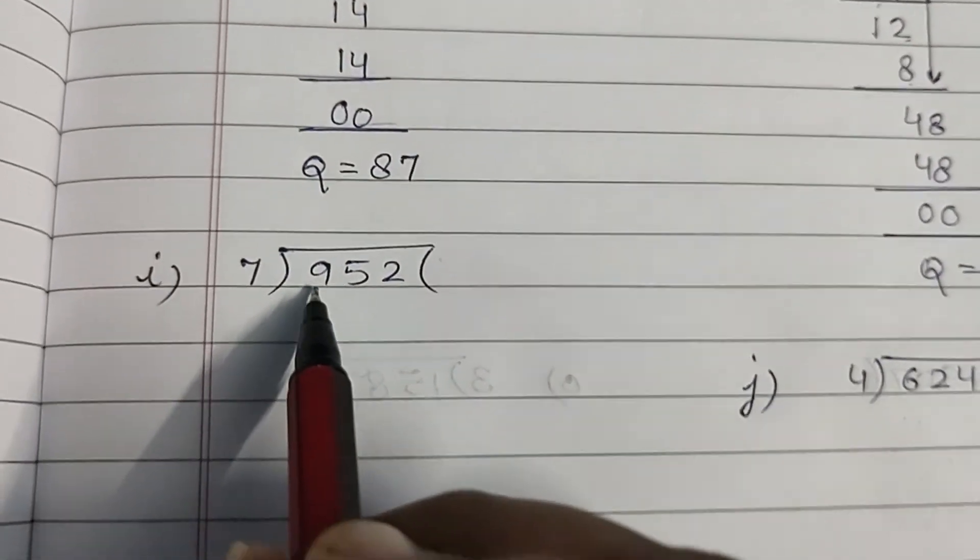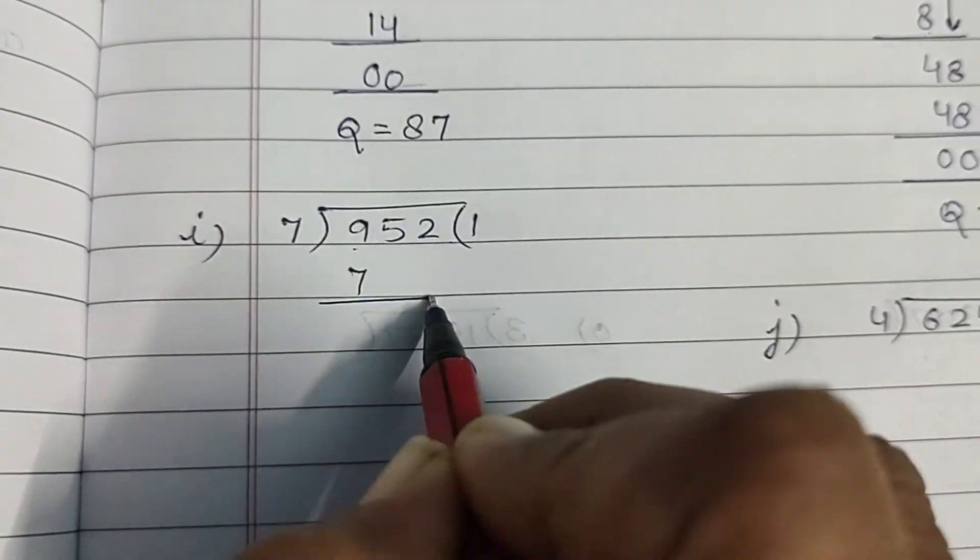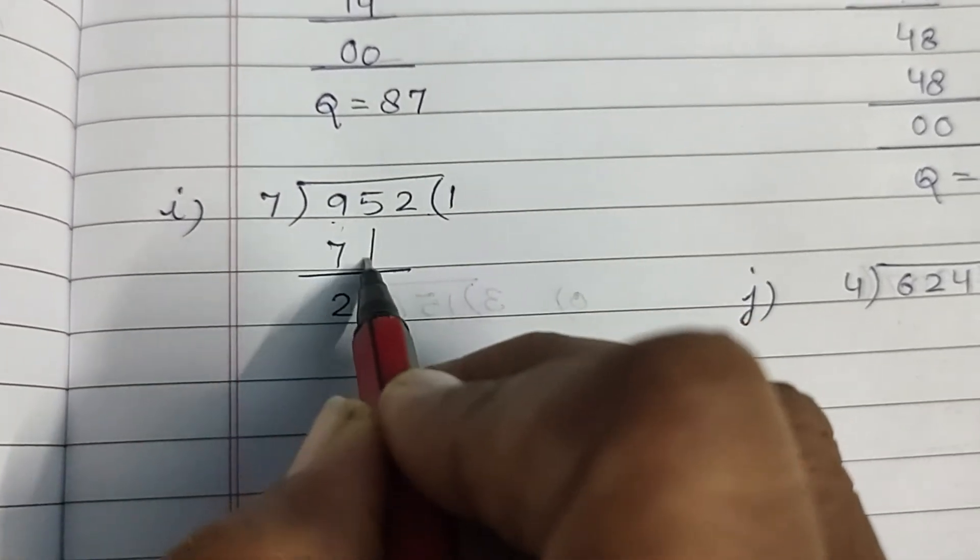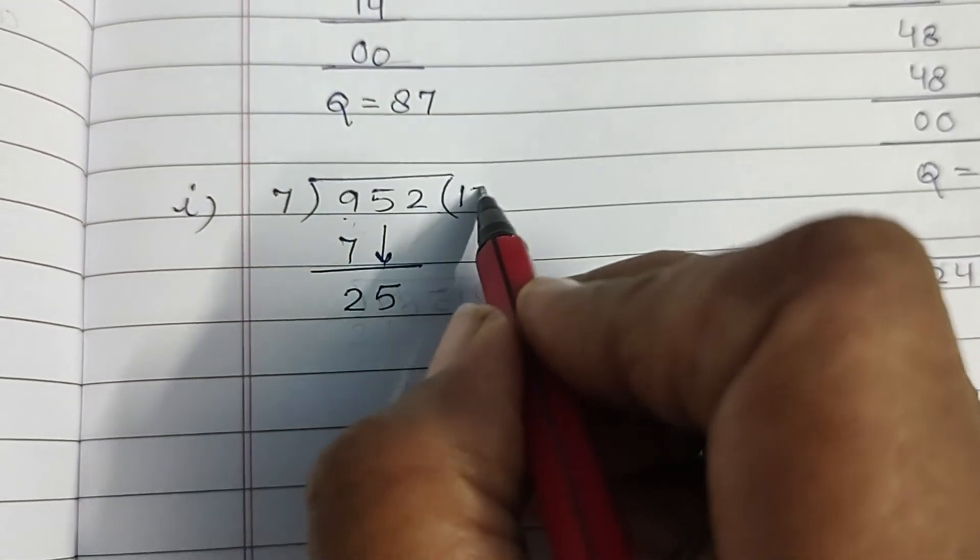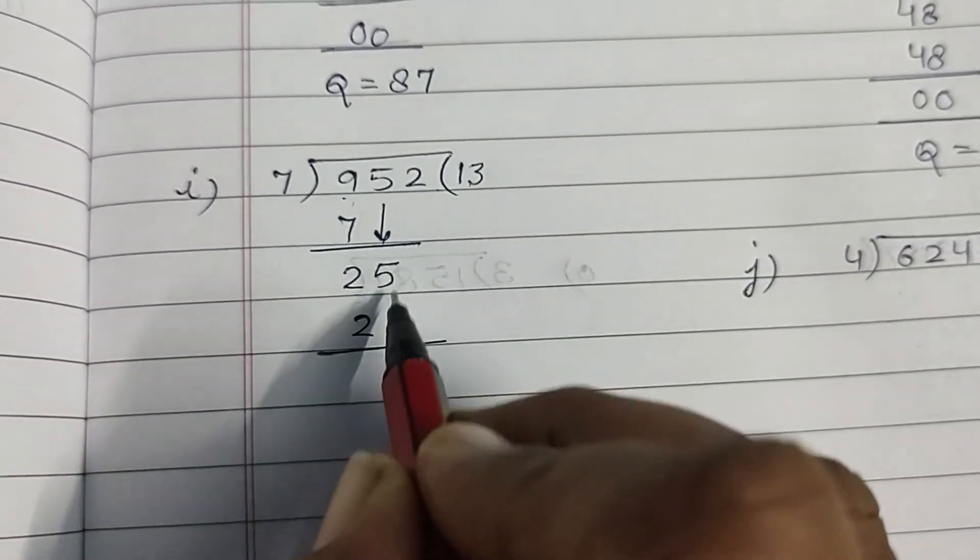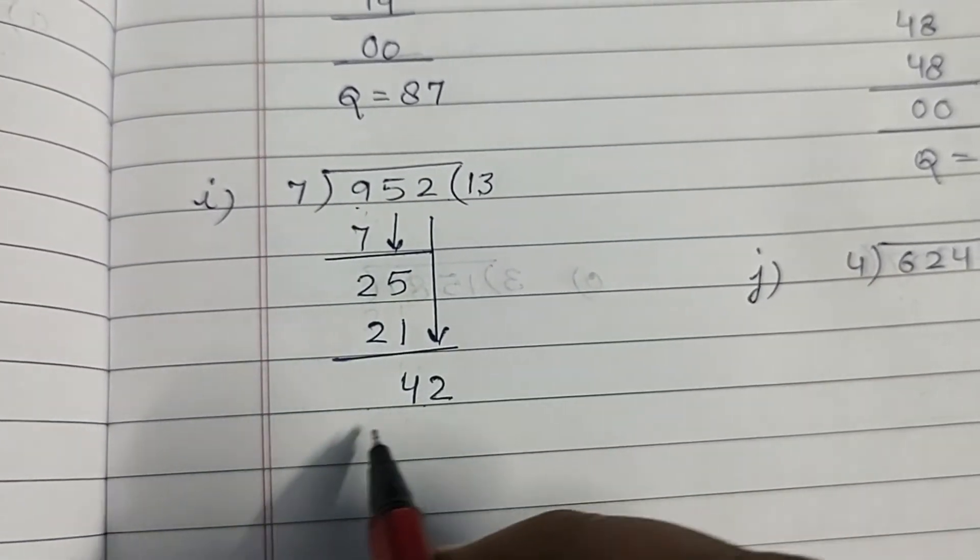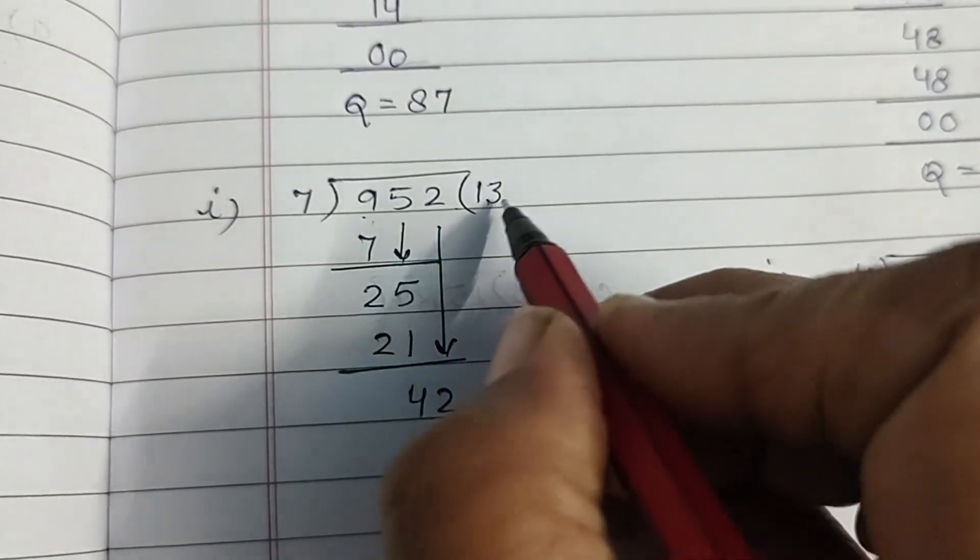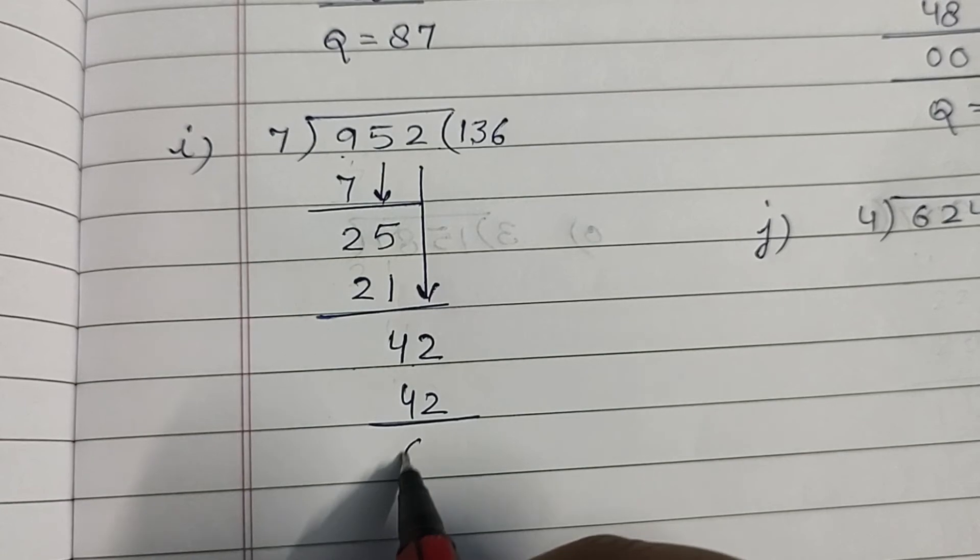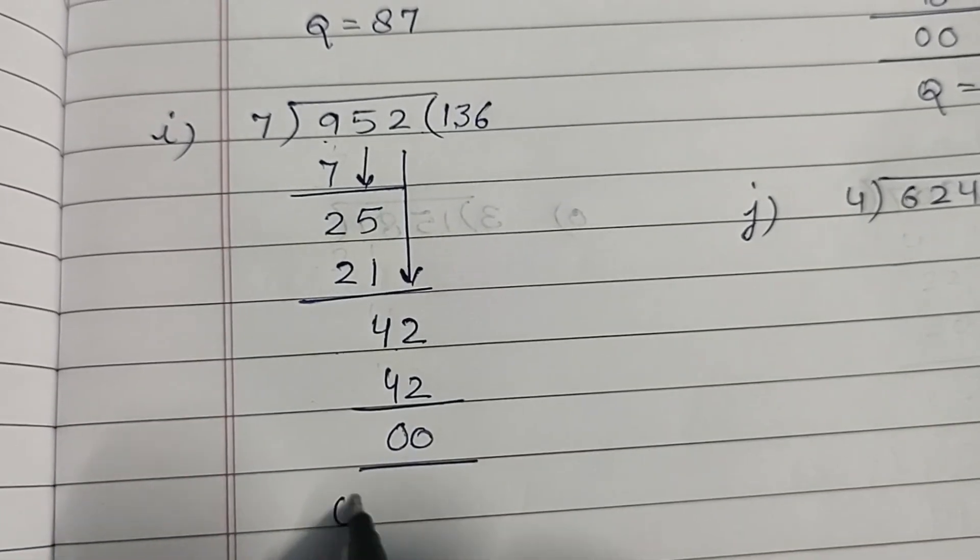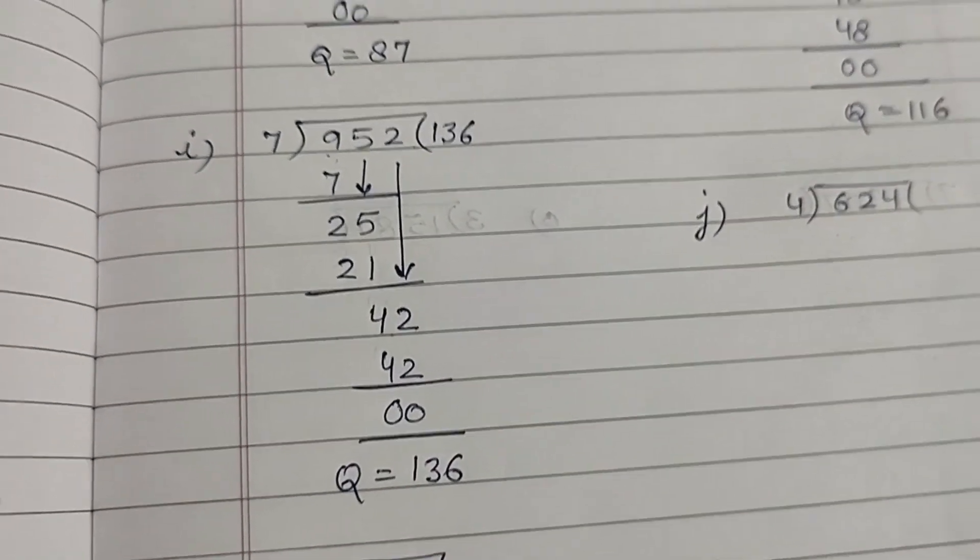Now 952 divided by 7. 7×1, 7. 9 minus 7, 2. Bring 5 down, ban gaya 25. 7×3, 21. 25 minus 21, 4. Bring 2 down, ban gaya 42. 7×6, 42. 42 minus 42, 0. Quotient is equal to 136. Theek hai?